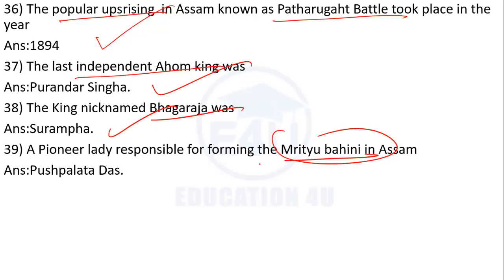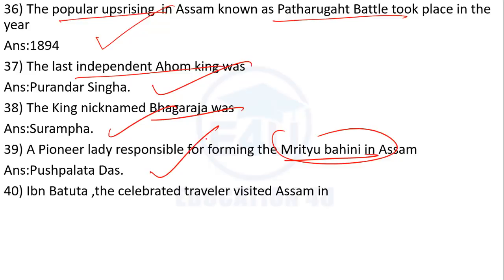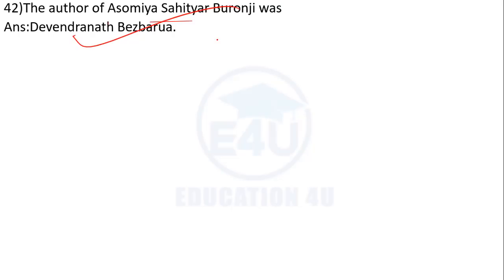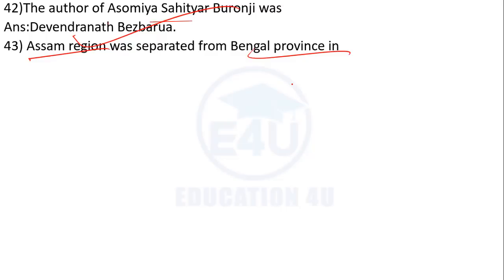Ibn Batuta, the celebrated traveler, visited Assam. The first Ahomiya Sahitya Buranji — who wrote it? The answer is Debendra Nath Bezbaruah who wrote the Ahomiya Sahitya Buranji. Assam was separated from Bengal in 1874. Also, Assam and Bengal — when were they separated? The answer is 1874.